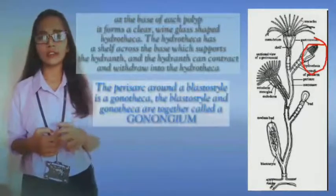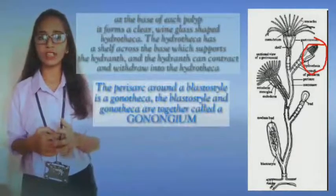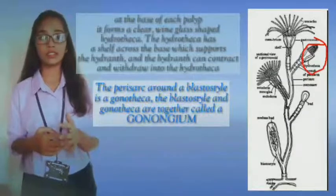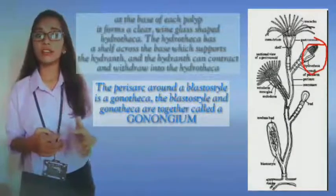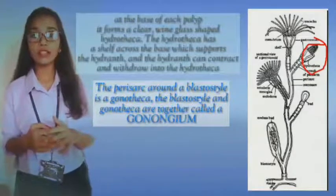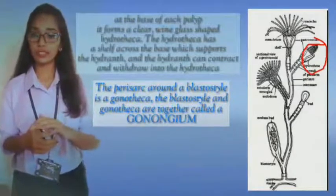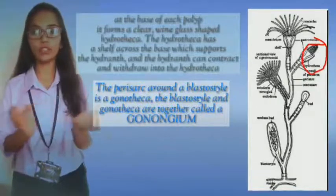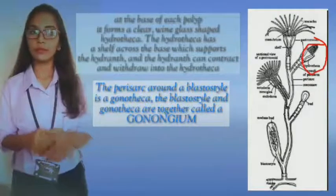The Perisarch around the blastostyle is called a gonotheca. The blastostyle and gonotheca together are called a gonangium.